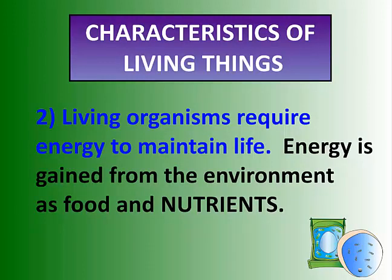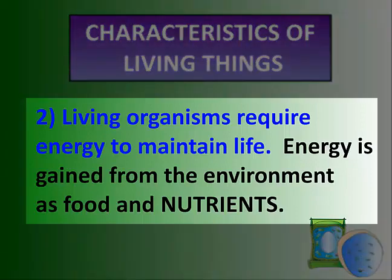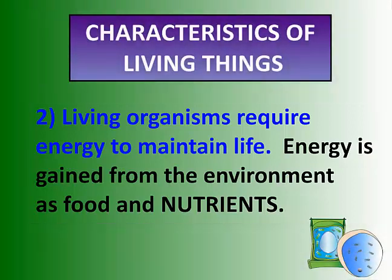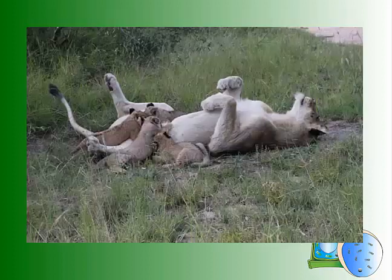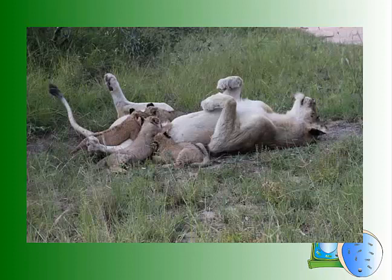Characteristic number two: living organisms require energy to maintain life. We gain our energy from food and nutrients — whatever we consume. Some animals or organisms will gain their energy from sunlight or from plants. Every living thing gets its food from different resources. The cubs here are feeding from mum — that's how they are fed first, and then they begin to fend for themselves.